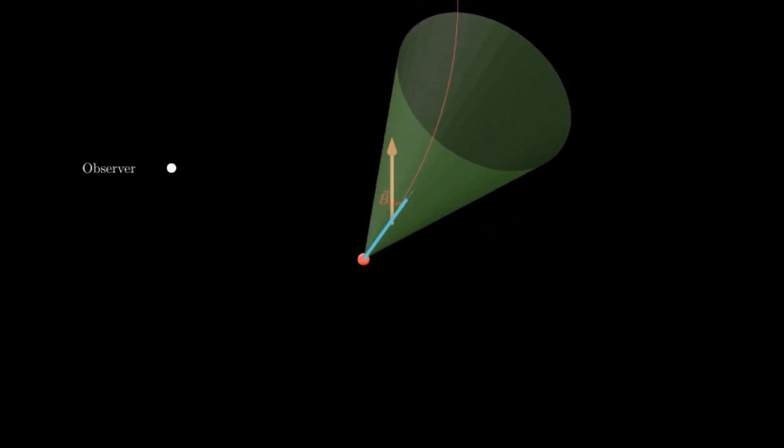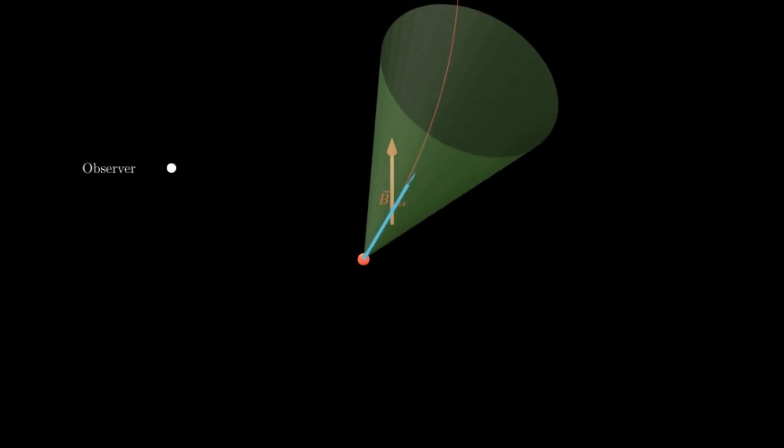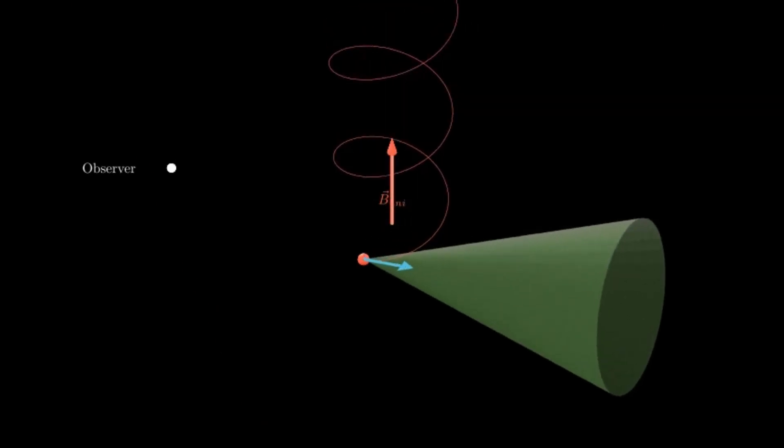See how at low V parallel this looks very similar to the 2D perpendicular case. However, as we increase V parallel, the helix stretches and the beaming effect actually points the radiation in the direction of the magnetic field.